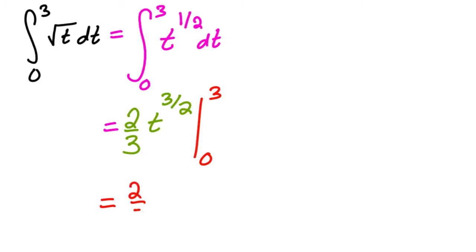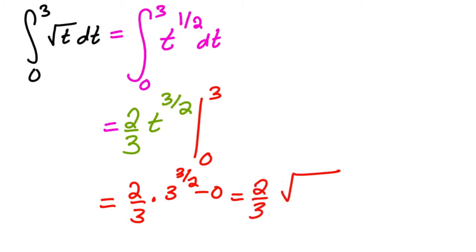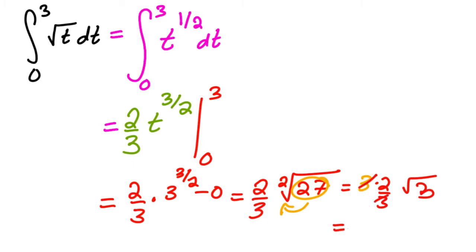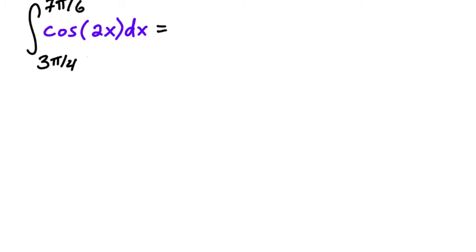This equals two thirds times 3 to the three halves minus 0. We can simplify: this is two thirds times the square root of 3 cubed, which is 27. Taking out a 3 gives 3 times two thirds times square root of 3, which simplifies to 2 square root of 3.